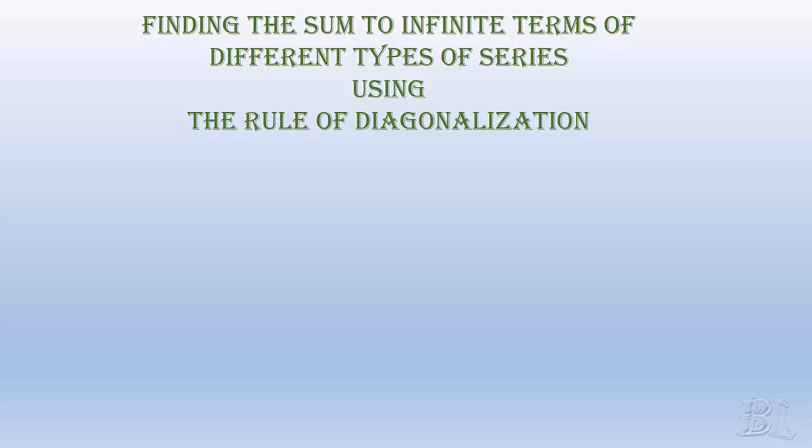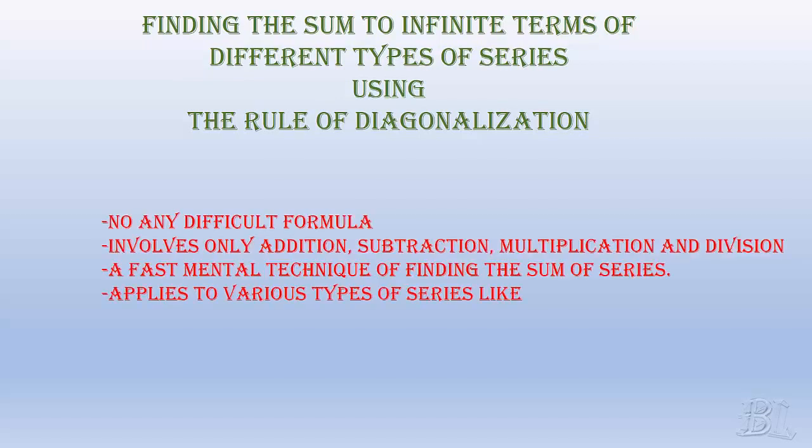Today, I am going to show you how to find the sum to infinite terms of different types of series using a simple rule which I call the rule of diagonalization. This rule doesn't have any difficult formula. It involves simple arithmetic calculations only. Also, it can be used as a fast mental technique to find the sum of series.